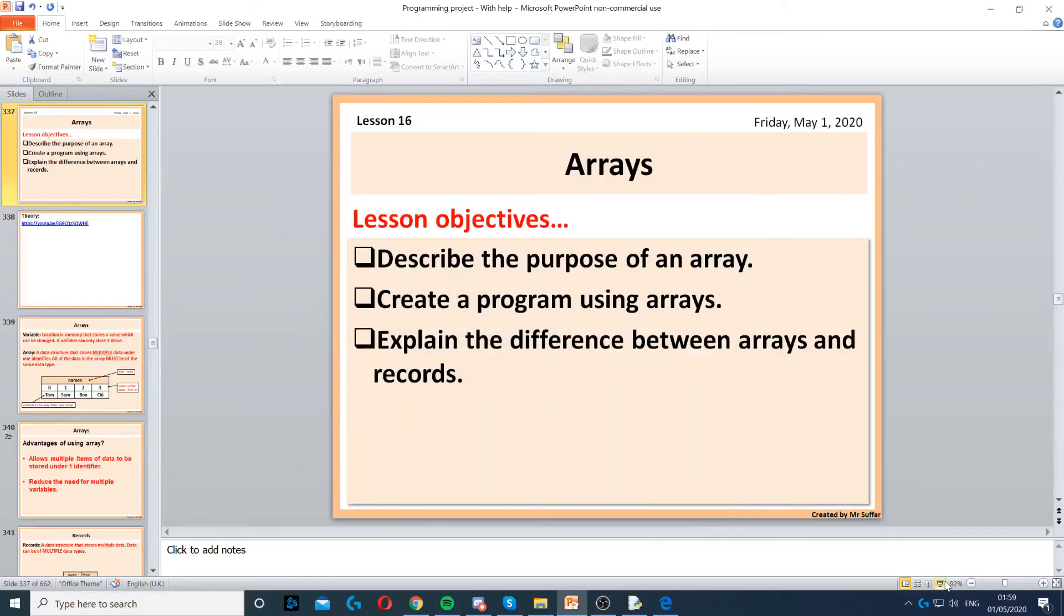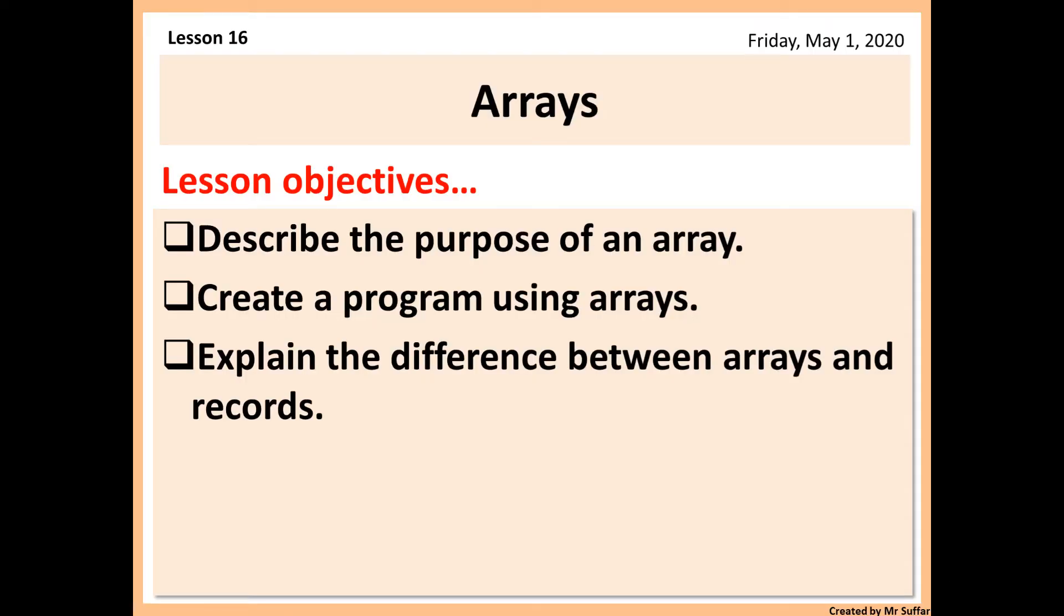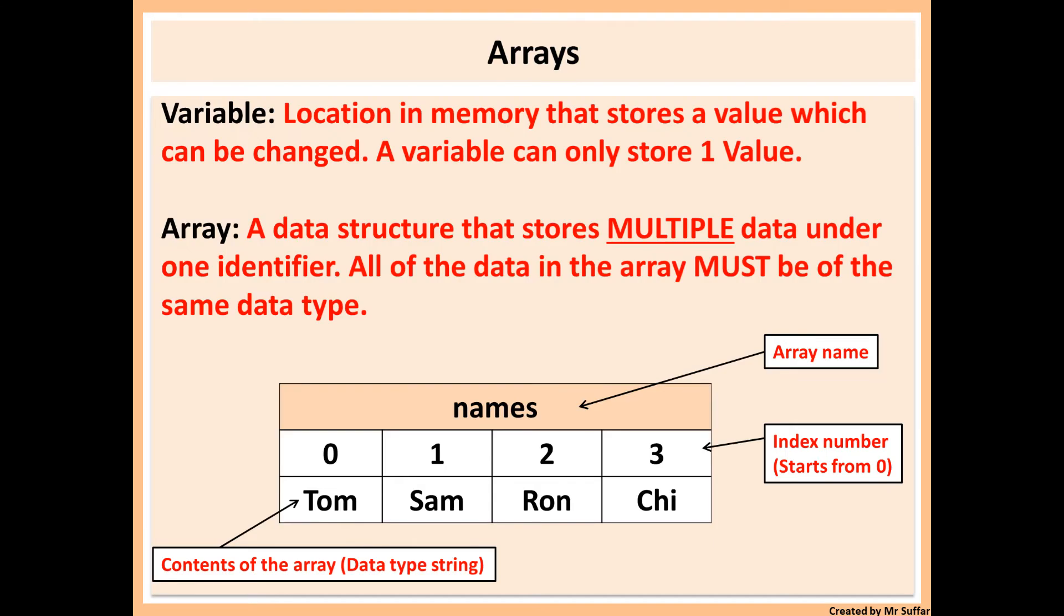In this lesson we're going to look at arrays. An array is a data structure. The difference between a variable and an array is that the variable can only store one value, it's a location in memory that stores one value. Arrays are a series of memory locations, so more than one memory location, and they can store multiple values under one identifier, under one name.